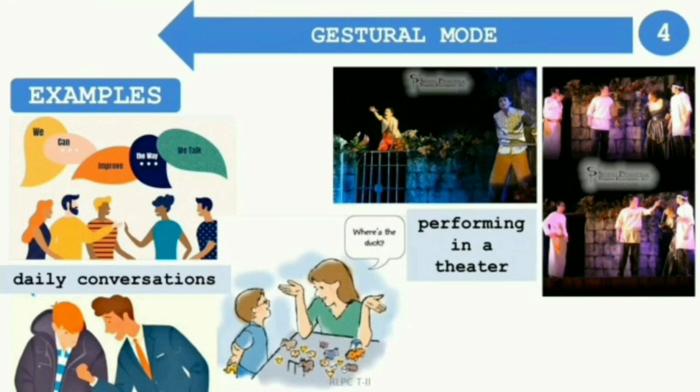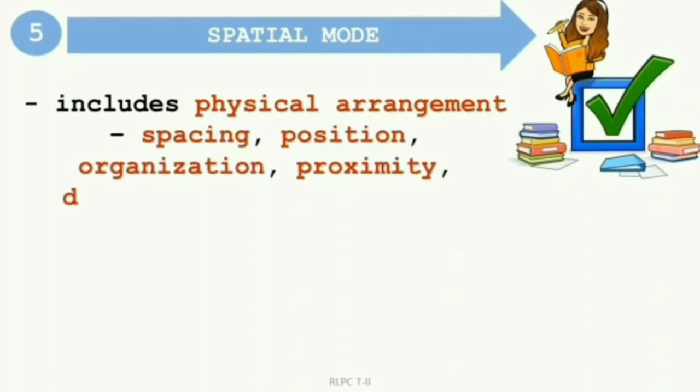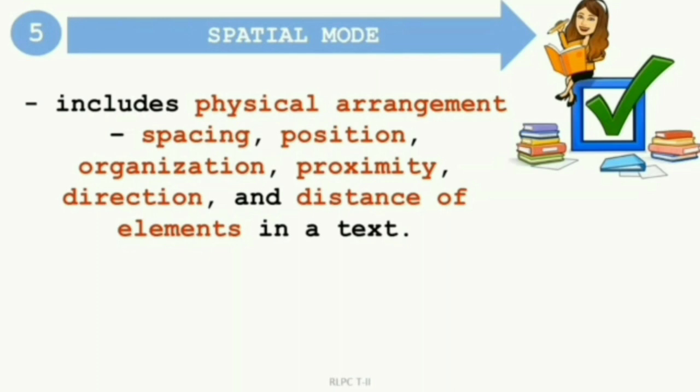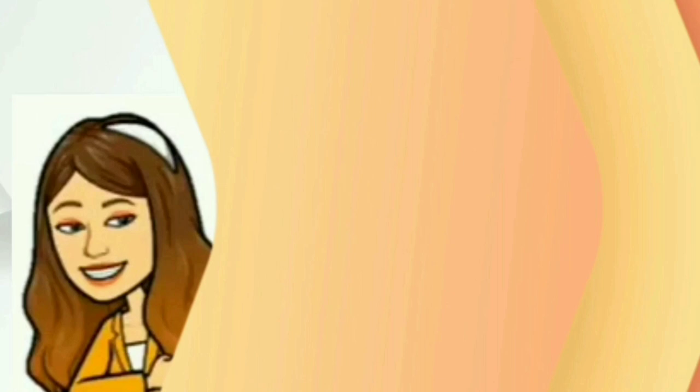And the last is spatial mode. Spatial mode includes physical arrangement like spacing, position, organization, proximity, direction and distance of elements in a text. Space extends from the design of the picture in a book, a page in a graphic novel or comics, a web page, section of the screen, framing of shots in moving images, to a design of a room through architecture and landscape. Examples of spatial mode are chair and table arrangement, website with menu and header, stand in line, and location of a place.